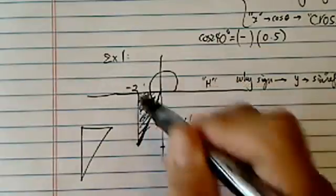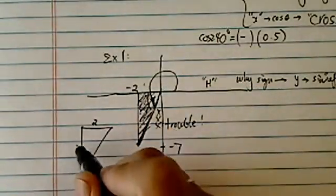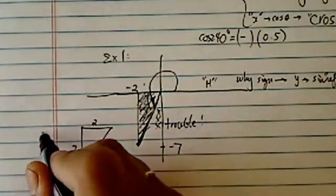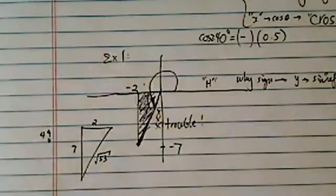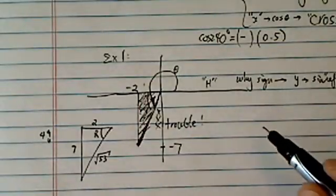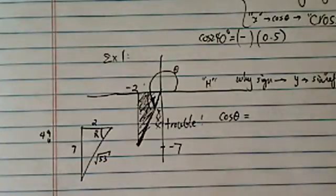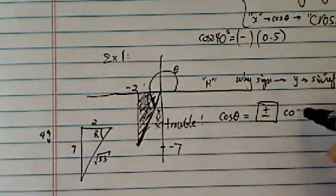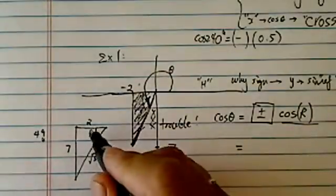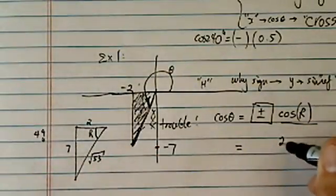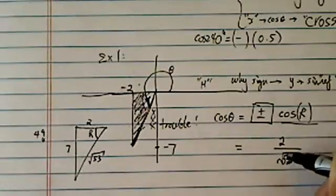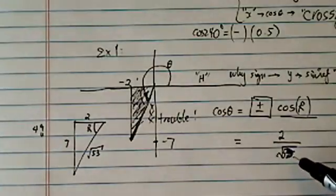So here's my reference angle, this shaded area over here. Now with the minus 2, minus 7, this is minus 2, this is minus 7. I know this side is 2 and this side is 7. Pythagorean theorem gave me, this one is 53. 49 and 4, that's 53. This one is my reference angle. So we were asked to find cosine of theta. Now it's plus minus cosine reference angle. Let's find what cosine reference angle is. This is pretty easy. Cosine reference angle is just 2 over radical 53.